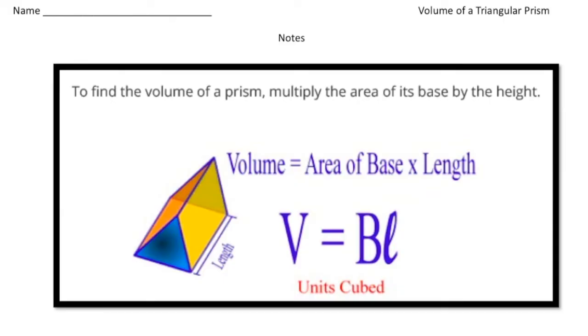All right, so how to define the volume of a triangular prism. Well, it's actually pretty easy and all you got to know is this formula right here. Please underline this: to get the volume of a triangular prism, it's just the area of the base times the length.